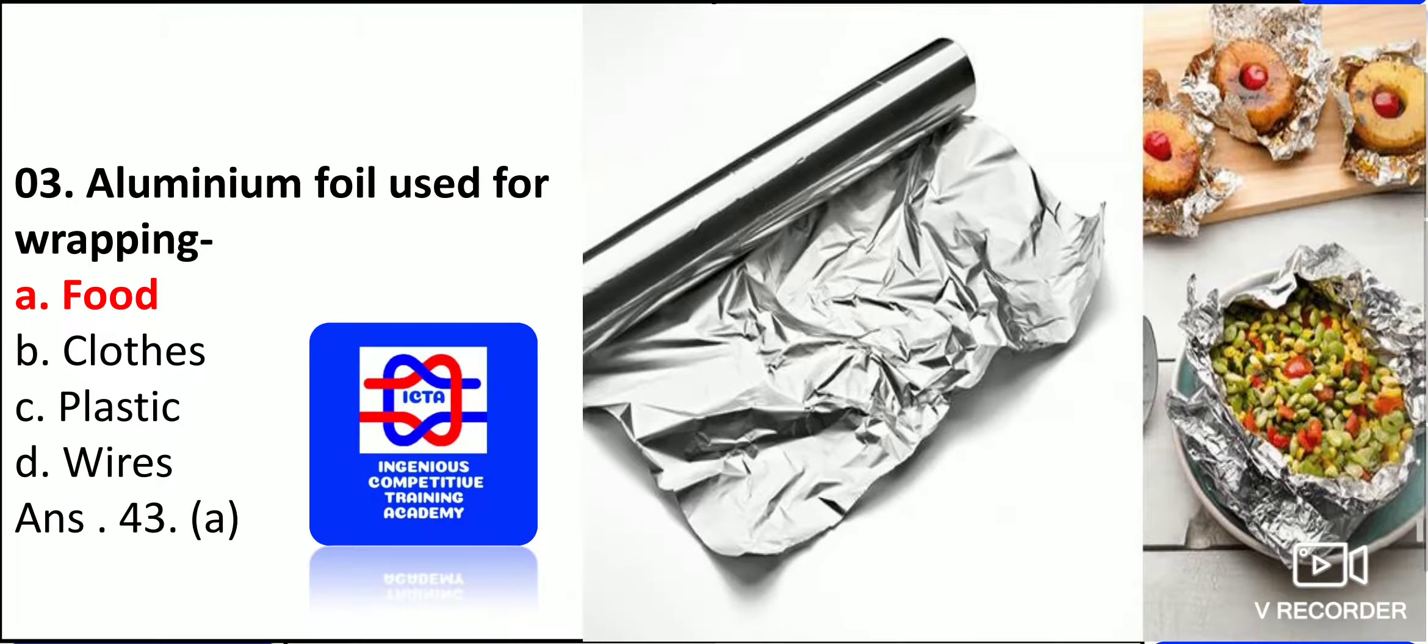Aluminum foil is used for the wrapping of food. I told you already, aluminum is used in the preservation of food for wrapping, for parcel purposes. We can use it. It can retain for long duration. The hotness will be there.